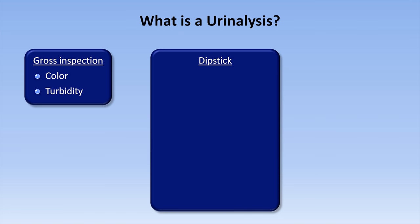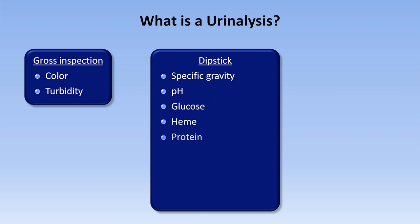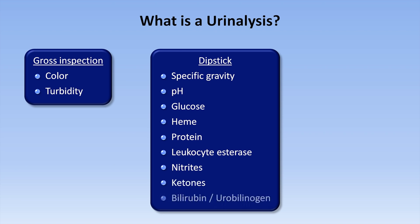The specific properties and constituents tested via dipstick include specific gravity, pH, glucose, heme, protein, leukocyte esterase (sometimes just called leukocytes), and nitrites. Depending upon the lab and specific reagent strip, you may also see ketones, bilirubin, and urobilinogen.